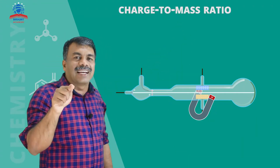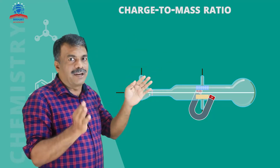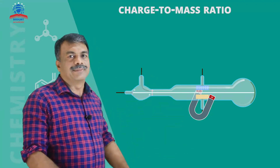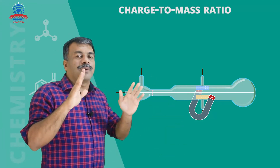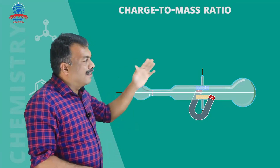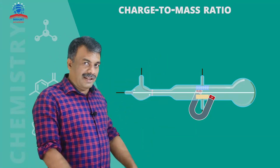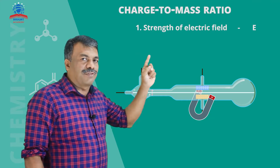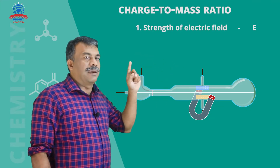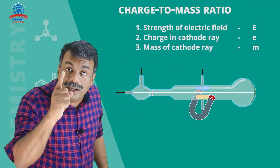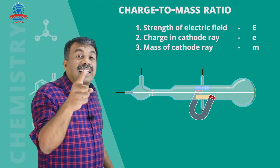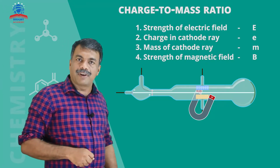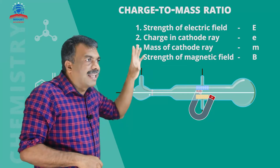The magnetic field nullifies the force — the electric force equals the magnetic force. So by measuring the magnetic field quantities and the electric field strength E and magnetic field strength B, we can carry out the experiment.